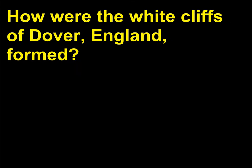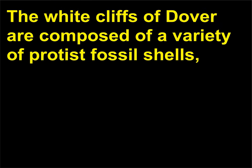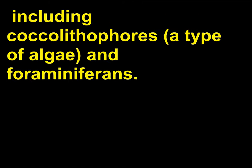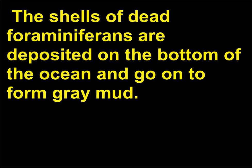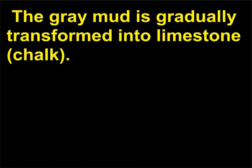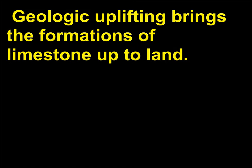How were the White Cliffs of Dover, England, formed? The White Cliffs of Dover are composed of a variety of protist fossil shells, including coccolithophores (a type of algae) and foraminiferans. The shells of dead foraminiferans are deposited on the bottom of the ocean and go on to form gray mud, which is gradually transformed into limestone (chalk). Geologic uplifting then brings the formations of limestone up to land.